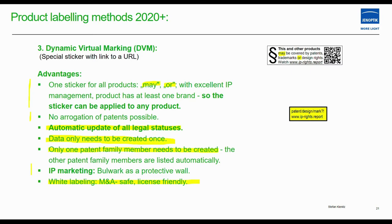IP marketing will be covered in another episode, but it acts as a protective wall. White labeling is very interesting — we do not use the URL or website of the company directly. For example, in the case of Gin Optic, we decided to use white labeling. This is good for M&A — it is M&A safe if some products or divisions are sold — and it is also license friendly.